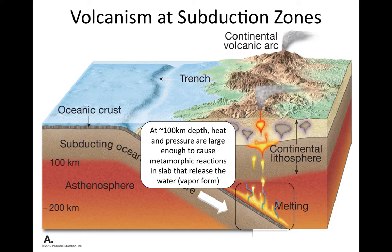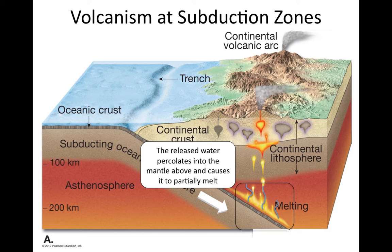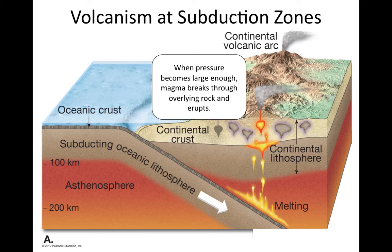The water escapes into the overriding mantle material, which causes this mantle rock to partially melt. Water being infused in this mantle rock causes it to partially melt. That molten material rises because it's buoyant. This released water percolates into the mantle above, causing it to partially melt. The partial molten material is less dense than the solid material surrounding it, so it begins to ascend, where it ponds to form magma chambers where pressure builds until there's enough pressure for a volcanic eruption to occur. That's why volcanism occurs along subduction zones.